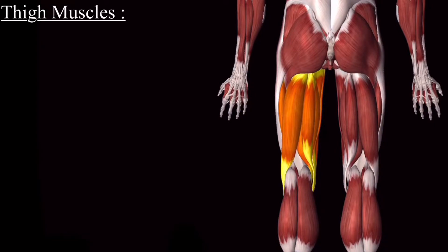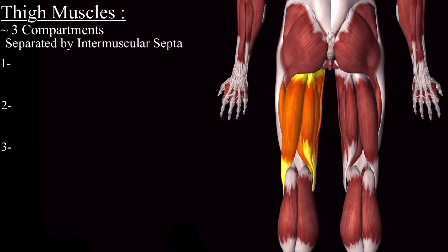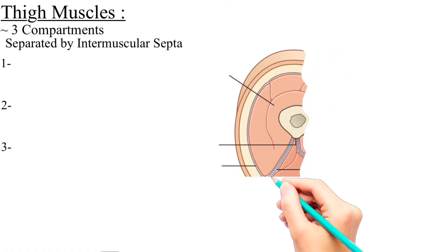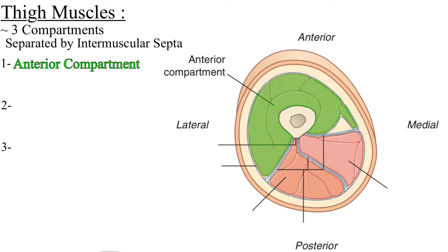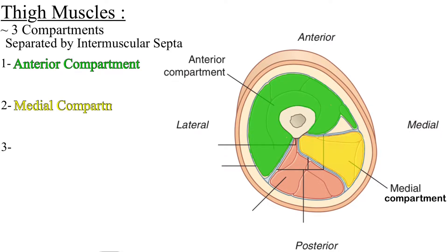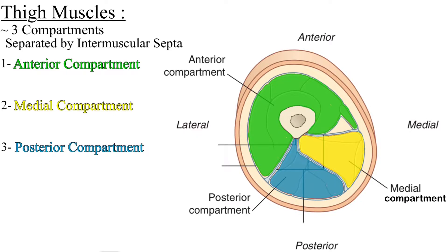The muscles of the thigh are arranged into three compartments, separated by intermuscular septa. This is the cross section of the thigh. In this cross section view, this is the anterior side and this is the posterior side. And of course, this is the medial side and this is the lateral side. Here you can see that the thigh has an anterior compartment, a medial compartment, and a posterior compartment, and these three compartments are separated by intermuscular septum.